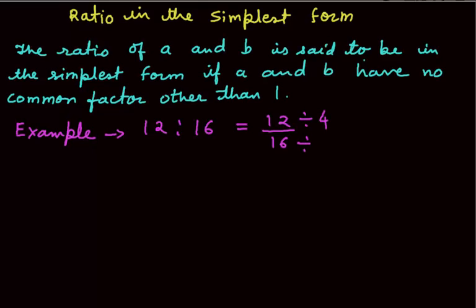So, I will divide both the numbers by 4. We will get 3 over 4. So, the ratio 3 is to 4 is the simplest form of 12 is to 16.